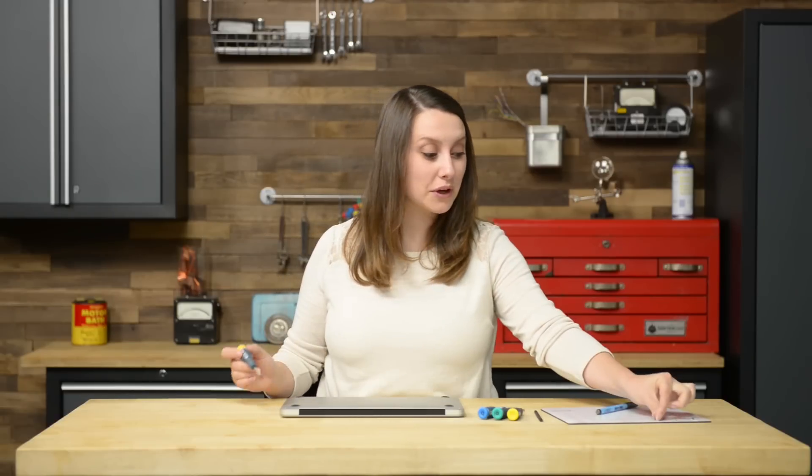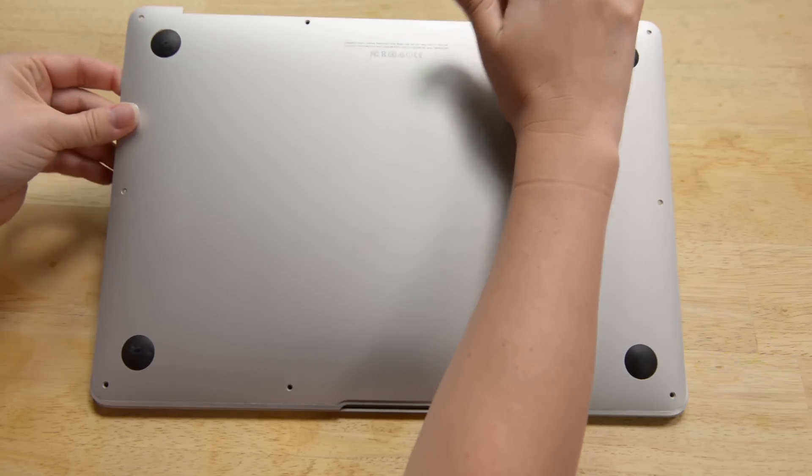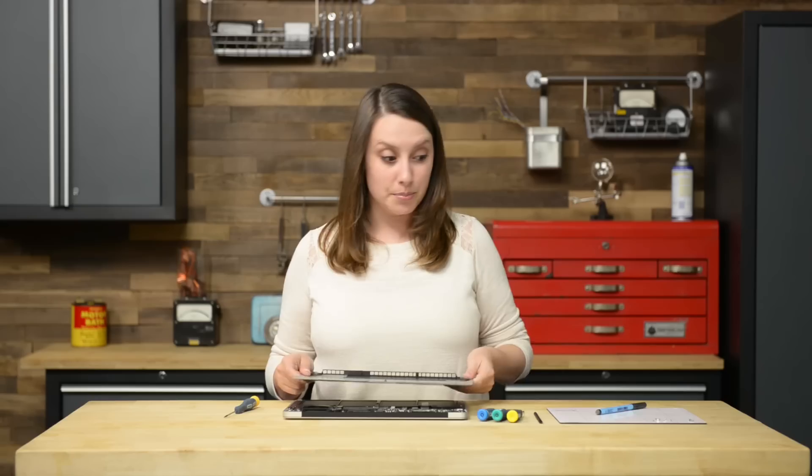Now you can pull the lower case off with your fingers. Before we go any further, we're going to disconnect the battery. Apple made this part easy for us by adding a plastic pull tab. Pull it towards the front of the air to disconnect the battery from the logic board, but make sure you don't pull up and damage the connector.